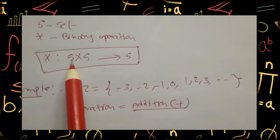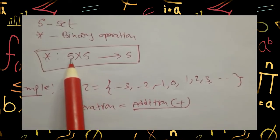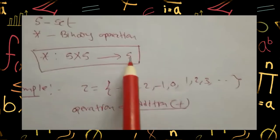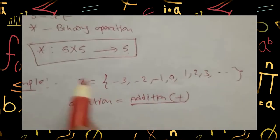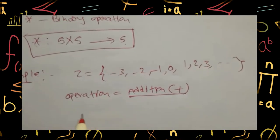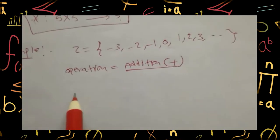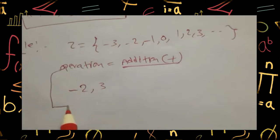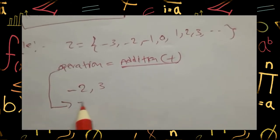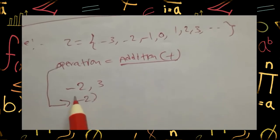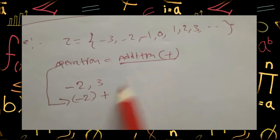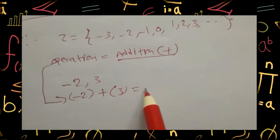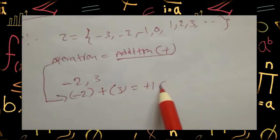That means if you perform an operation on any two elements of S, the result element should be in S only. Now I am taking any two elements: minus two and three. Performing the operation addition — minus two plus three gives plus one, which also belongs to Z.